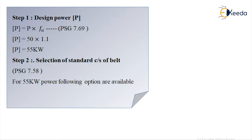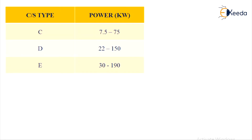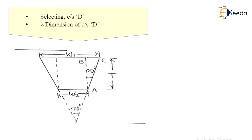Step 2: Selection of standard cross section of a belt. For 55 kilowatt power, the available options from the table are cross sections C, D, and E with power ranges 7.5–75, 22–150, and 30–190 kilowatt respectively. If two options are available, select the smaller section for less bending stress and more life. But if three options are available, select the middle option to compromise between life and strength.